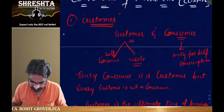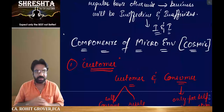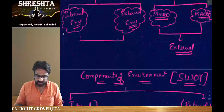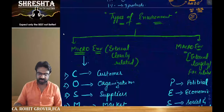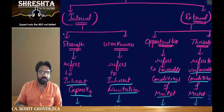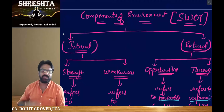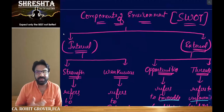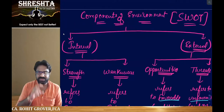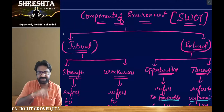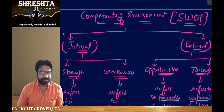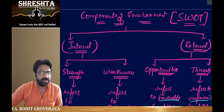Let us start. We already started with the micro environment. Before that, we started with two things: one is known as components of environment and another one is known as types of environment. When we talk about components, two things should come to your mind: internal and external. Out of SWOT — strengths, weaknesses, opportunities, and threats — strengths and weaknesses are internal, and opportunities and threats are external.